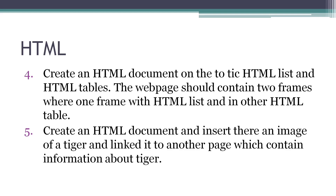Next, create an HTML document on the topic of HTML list and HTML table. The web page should contain two frames — one frame with an HTML list and another with an HTML table. You will make one main page and add two frames to it; in one frame you will put a table and in another frame you will put a list, making a total of three pages. This topic is important; the wording may change, but it can ask for one page containing some information and another page containing different information, combined together.